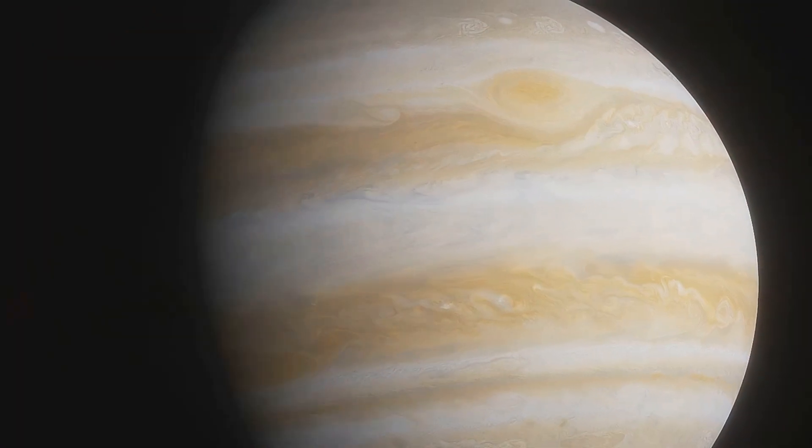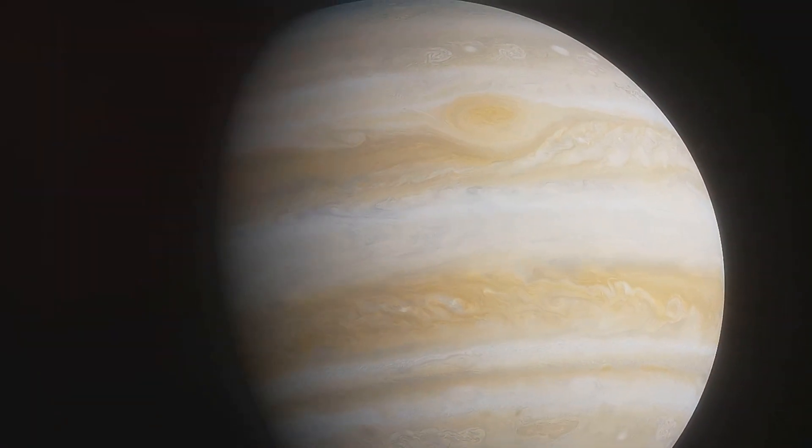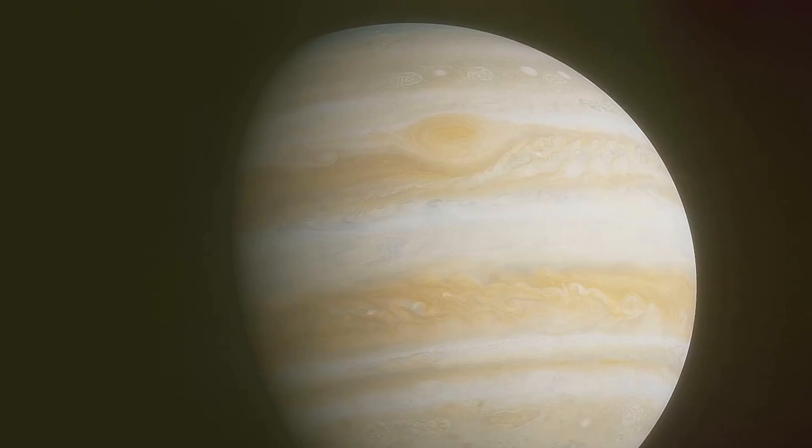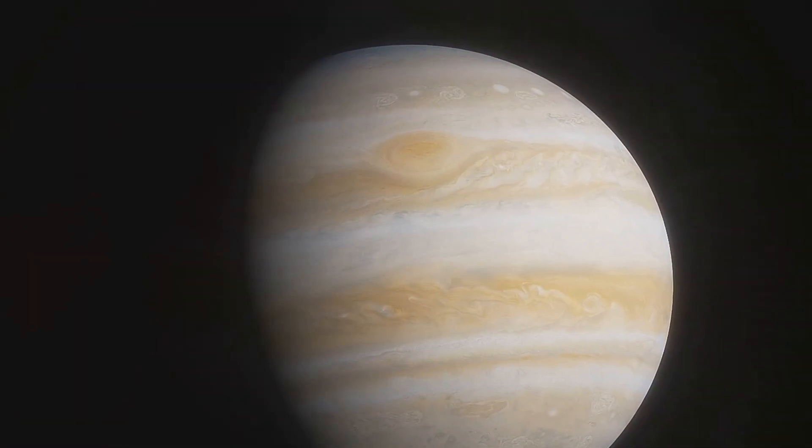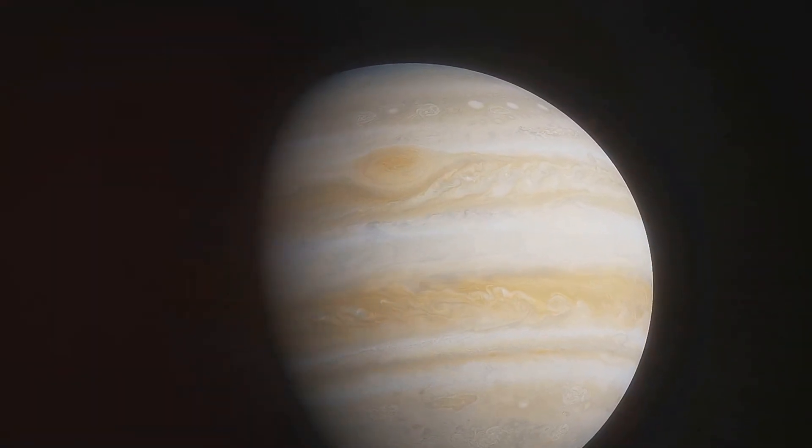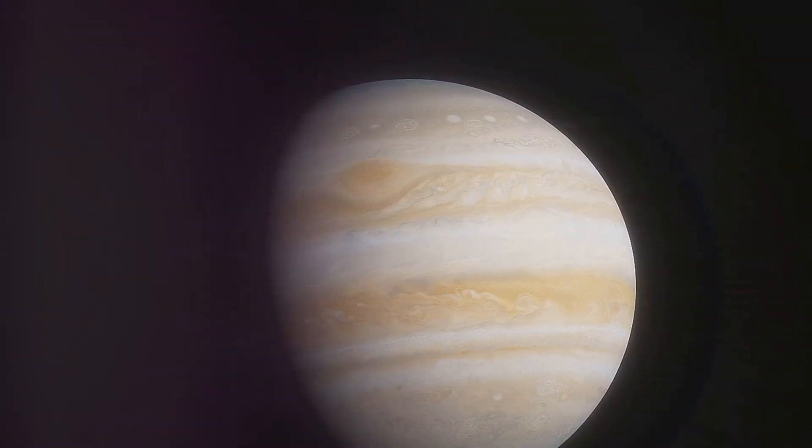Jupiter, the largest planet, is a gas giant with a mass two and a half times that of all the other planets combined. It has a strong magnetic field, dozens of moons, and a gigantic storm known as the Great Red Spot.